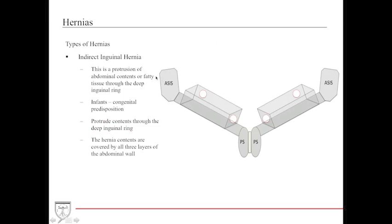An indirect inguinal hernia involves protrusion of abdominal contents or fatty tissue through the deep inguinal ring. This occurs when there is a failed fusion of the processus vaginalis, making it most likely to occur in infants with congenital predispositions. The hernia contents can protrude through the deep ring and enter the superficial inguinal ring, and are covered by all three layers of the abdominal wall — unlike direct hernias, which are only covered by the peritoneum and external oblique.